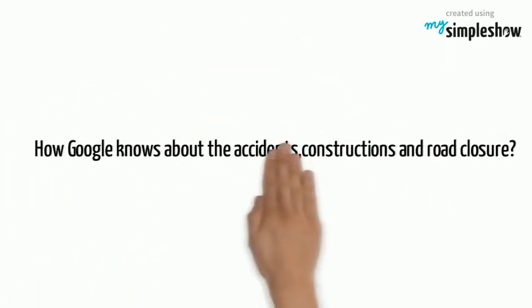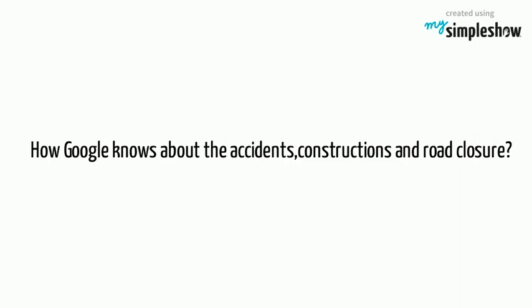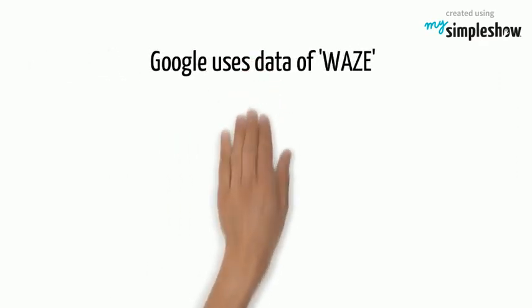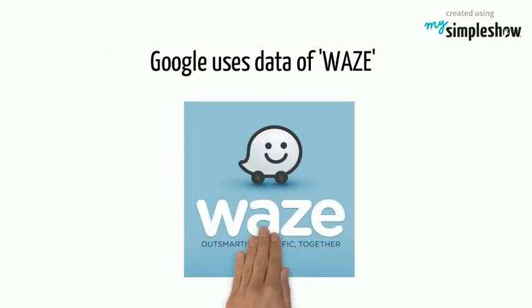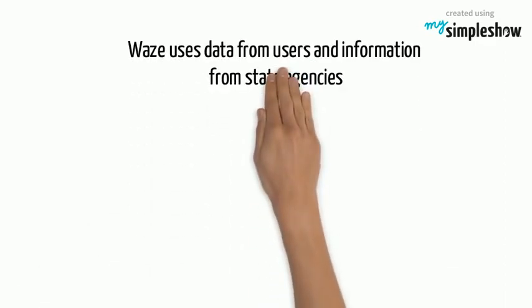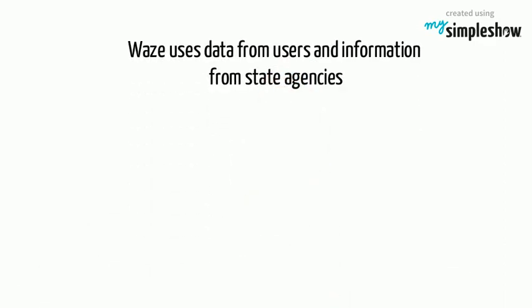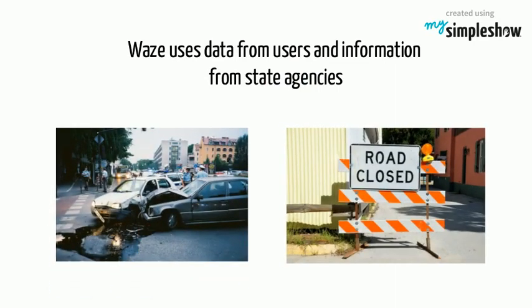But how does Google know about accidents, construction, and road closures? In this case, Google uses the crowdsourced data of the Waze app. This app, apart from using user data, also uses information from state agencies for providing better services like road accident and roadblock details.